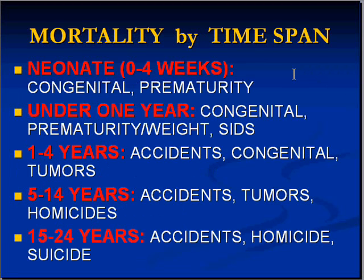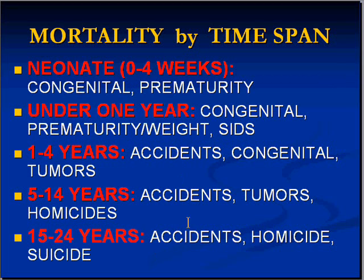Let's look at mortality in these age groups. The most common reasons for a neonate to die are basically two: number one, they were born prematurely and don't have the equipment to survive; number two, they may be victims of severe congenital anomalies which make it very difficult to live long. In the under-one-year age group — four weeks to 52 weeks — we have the same problems with congenital anomalies and prematurity. This is also the time period for sudden infant death syndrome. In the one-to-four and five-to-fourteen age groups, as well as 15 to 24, accidents are the number one reason. Children who develop tumors are very likely to get them at a very early age.